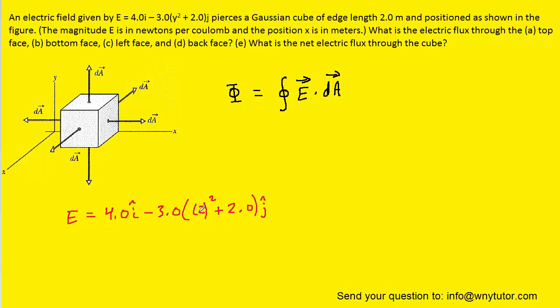We've gone ahead and plugged in the 2. We can simplify inside the parentheses because we have 4 plus 2, which is 6, and then multiply that by the 3. So we'll actually have a minus 18 j-hat for the j-hat component and then the 4.0 i-hat.